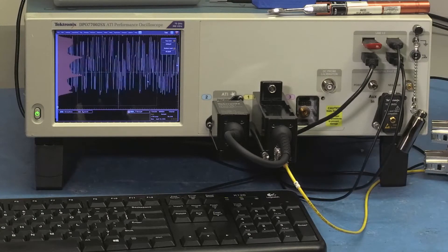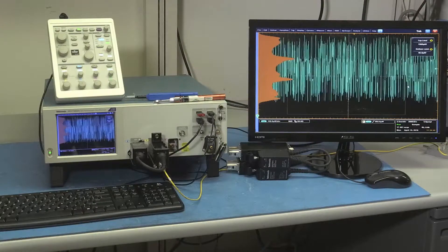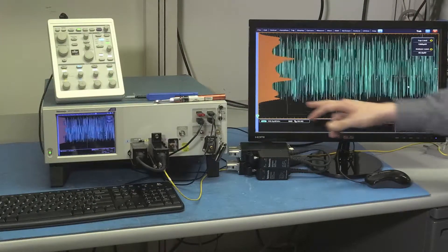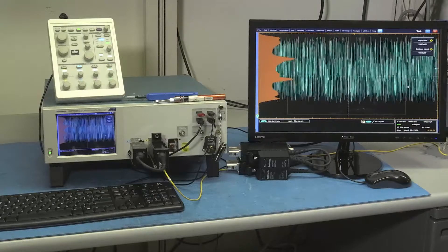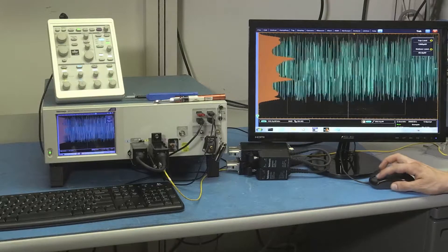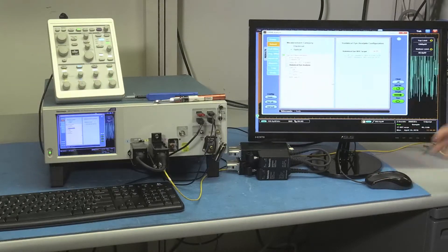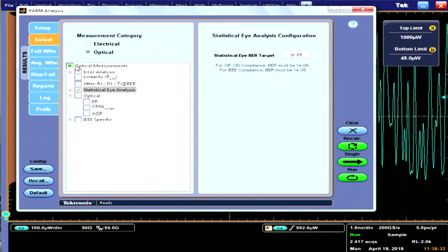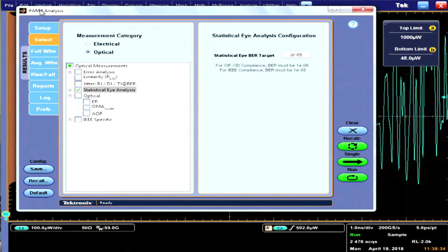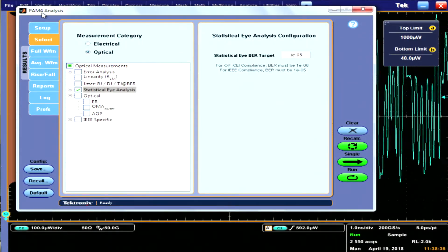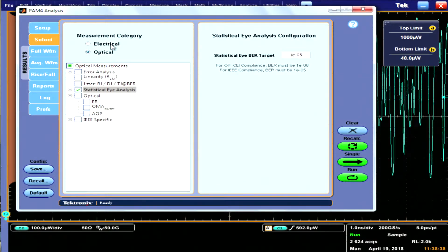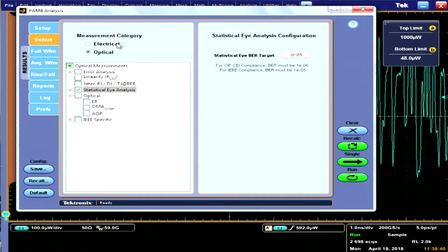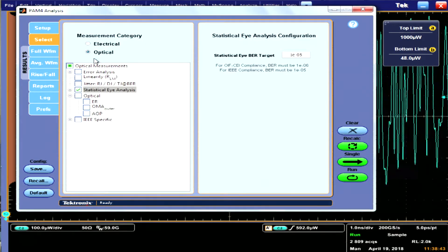This is roughly 26 gigabaud PAM4 signal as you can see here. You have four distinct levels and I'm just going to show you now how with our PAM4 application I can display an eye diagram in no time and recover the clock and show how an optical signal can be shown via the eye diagram.